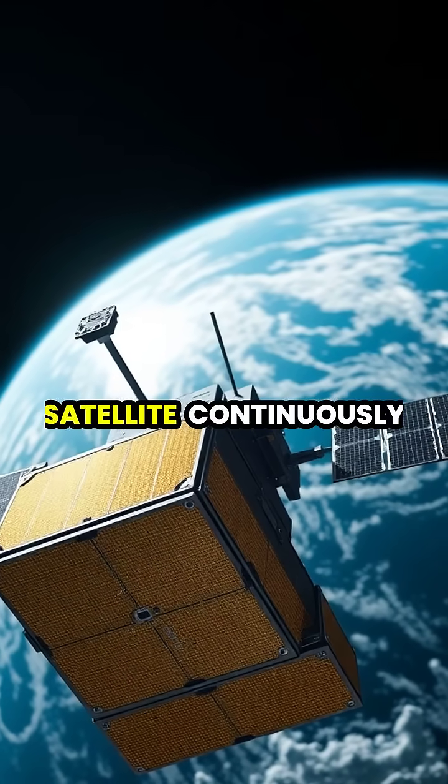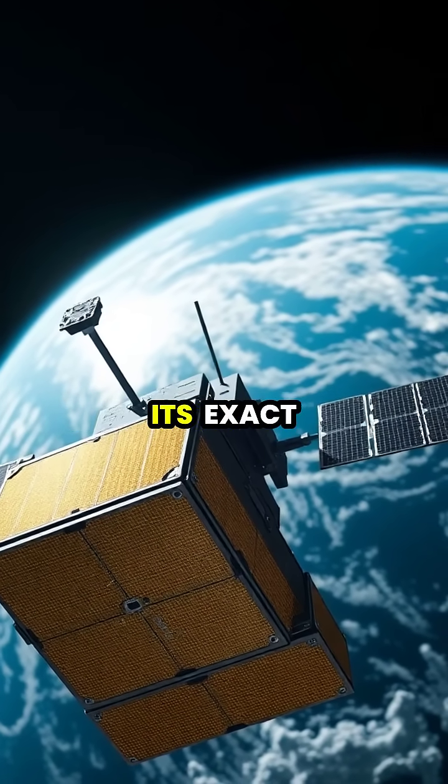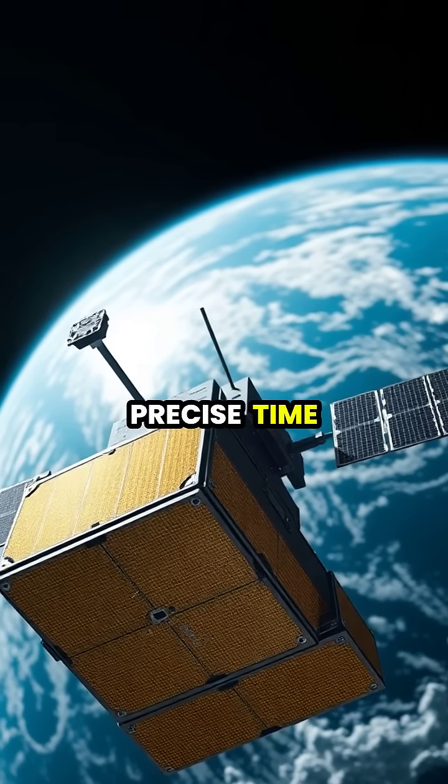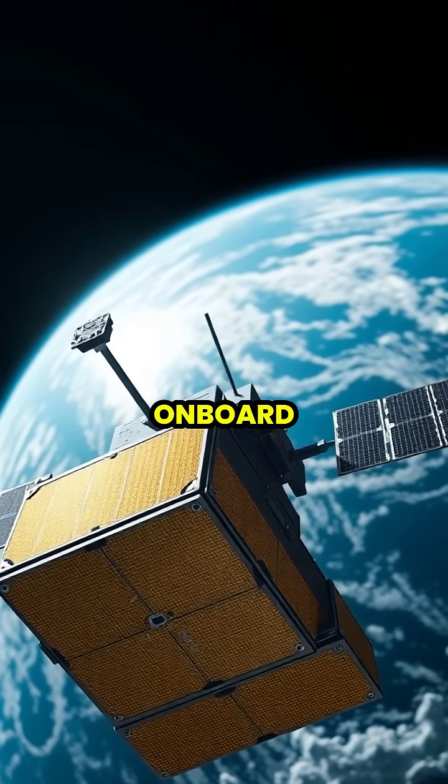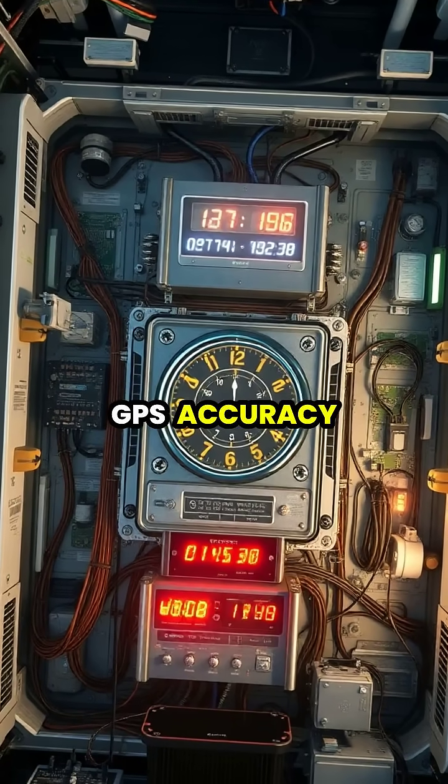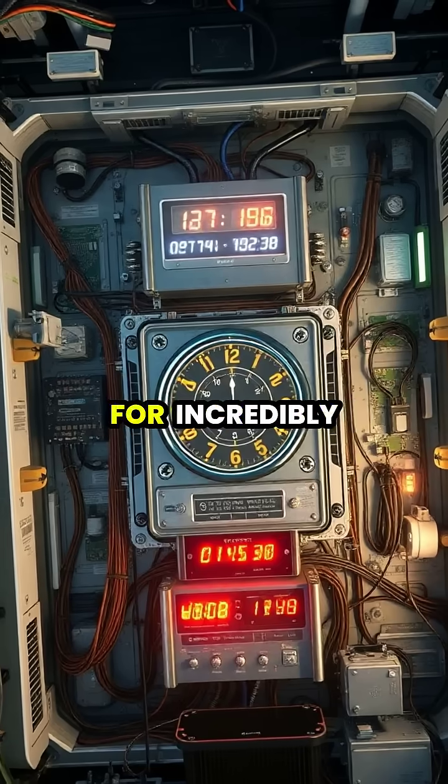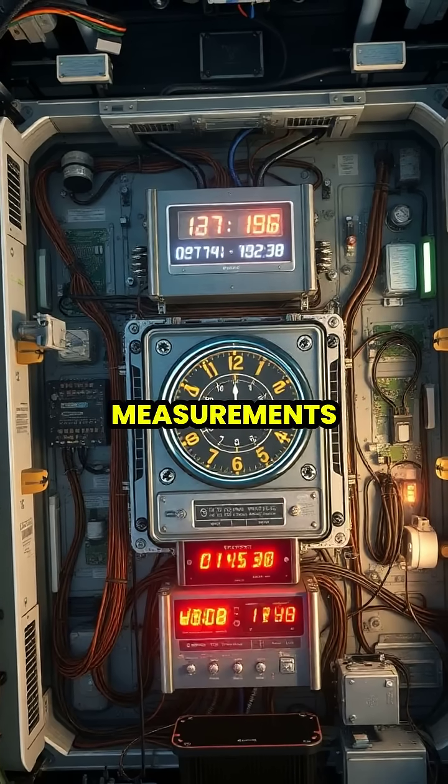Each GPS satellite continuously broadcasts radio signals containing its exact location and precise time from an atomic clock onboard. These atomic clocks are crucial to GPS accuracy as they're synchronized to within billionths of a second, allowing for incredibly precise time measurements.